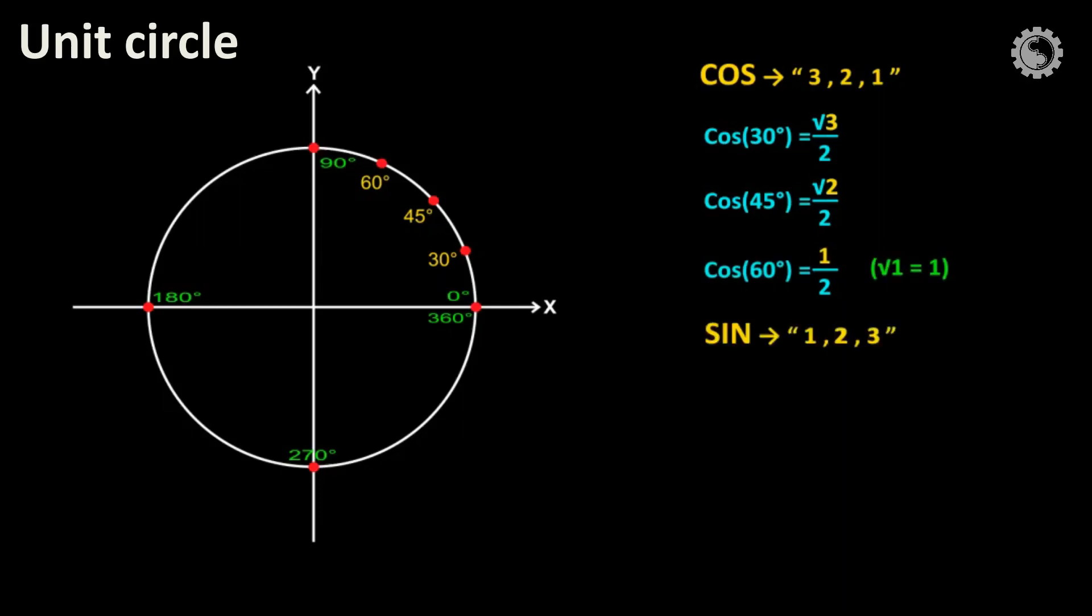And sine goes 1, 2, 3. Sin 30 degrees equals root 1 divided by 2. Here 1. Root 1 equals 1, so 1 divided by 2. Sin 45 degrees equals root 2 divided by 2. Here 2. Sin 60 degrees equals root 3 divided by 2. Here 3.